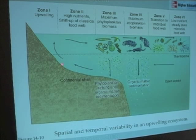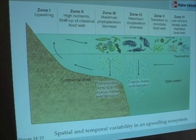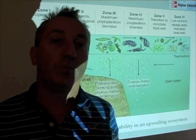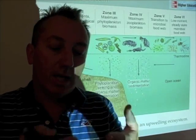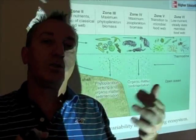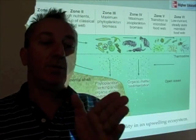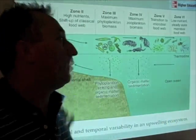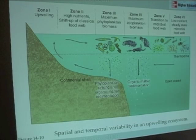Two things are important. First, in upwelling systems there is variation in space — from where the water is being upwelled to as it's carried offshore, different stages of the upwelling ecosystem will be present. Looking at a satellite image of upwelling and those threads of water being upwelled offshore, if you take a transect from shore out toward the middle of the ocean, each different segment will represent one of these different zones of upwelling. Upwelling systems vary in space.